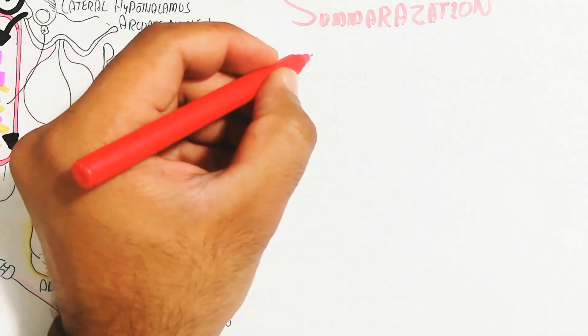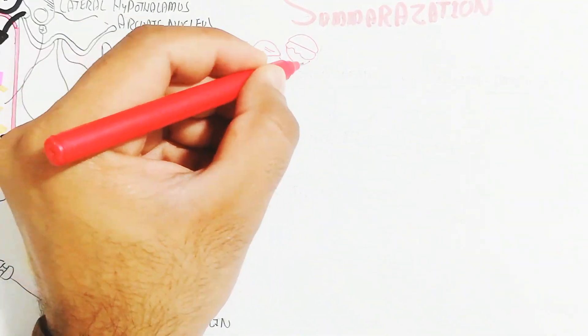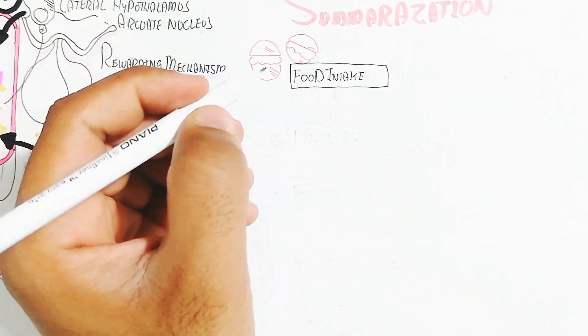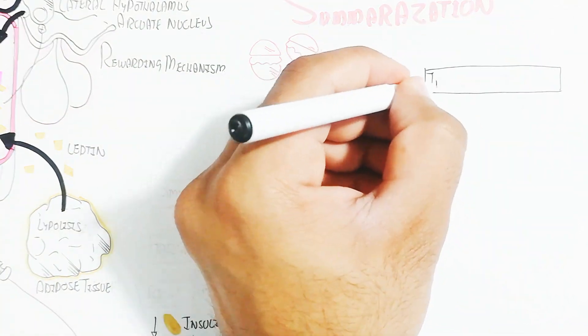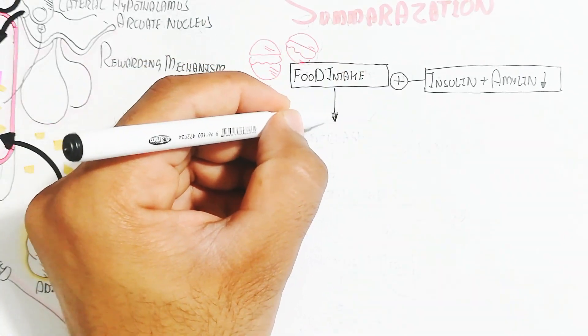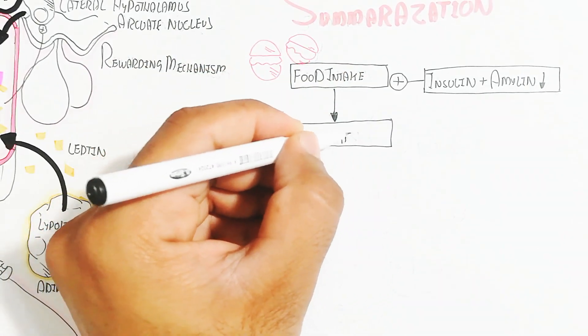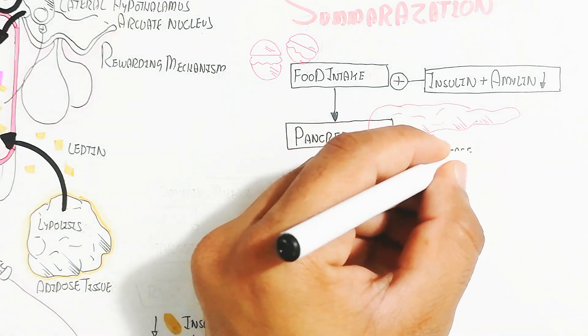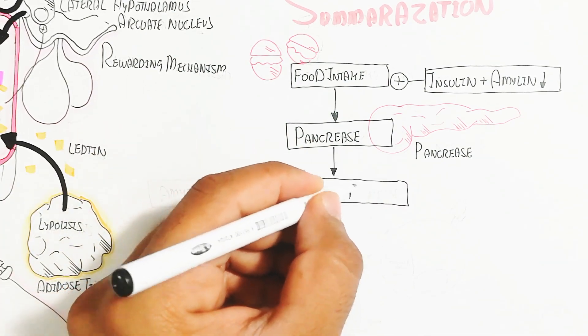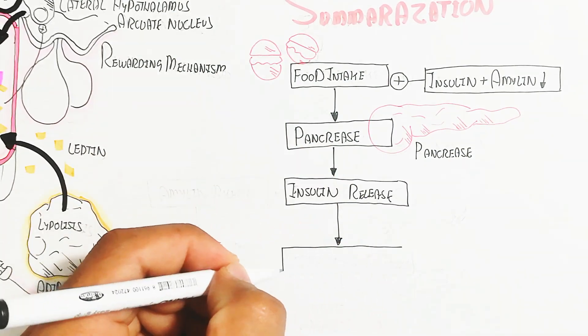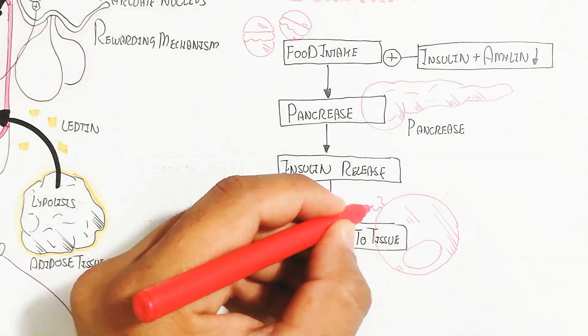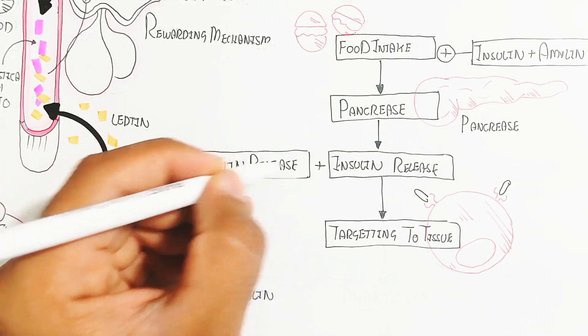Now the summarization. Satiety is important for amylin and insulin. Insulin and amylin collectively trigger satiety, so we don't feel hungry. When insulin and amylin decrease, food intake increases. When food intake is high, the pancreas increases insulin and amylin. Insulin targets different tissues for glucose influx from the blood circulatory system for satiety and reduced appetite.